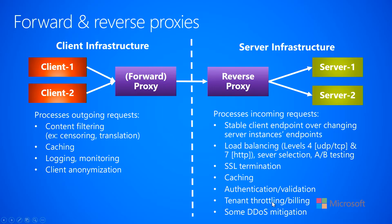The reverse proxy can also be used to do tenant throttling and billing. If the reverse proxy sees more than 1,000 requests per second from a particular client, it can return failure and not allow that many requests per second, so the back-end doesn't have to deal with that throttling, bookkeeping, or accounting. Some services bill for every request, so if the reverse proxy does authentication properly, it knows who to increment the billing counter for, and at the end of the month it can send that tenant a bill.